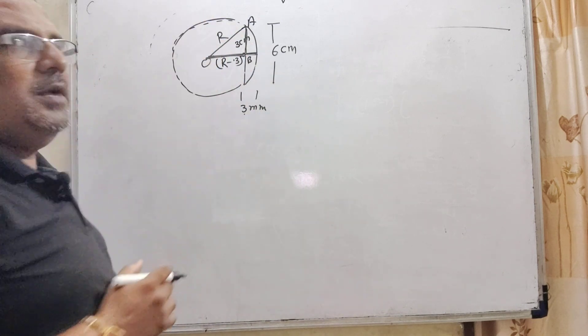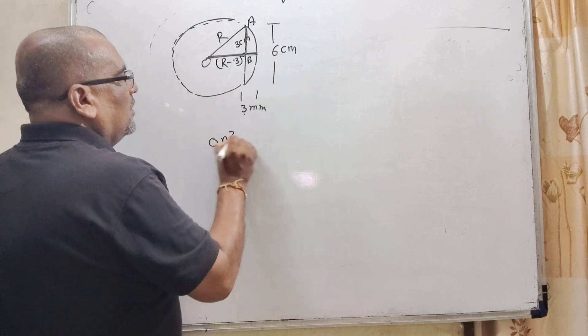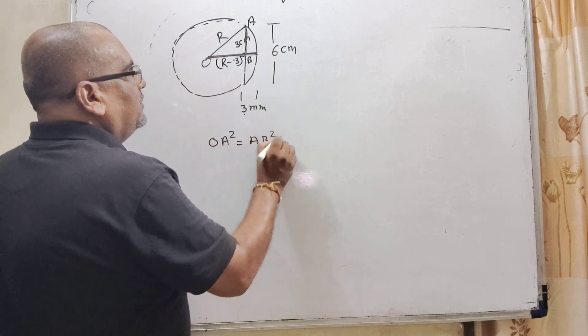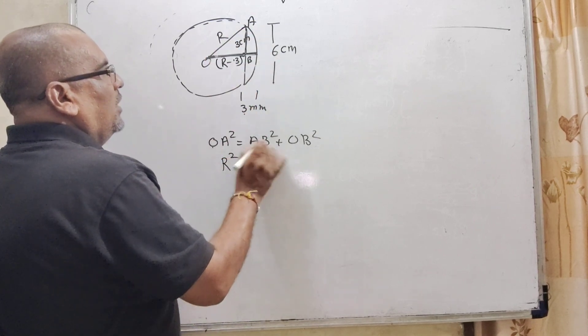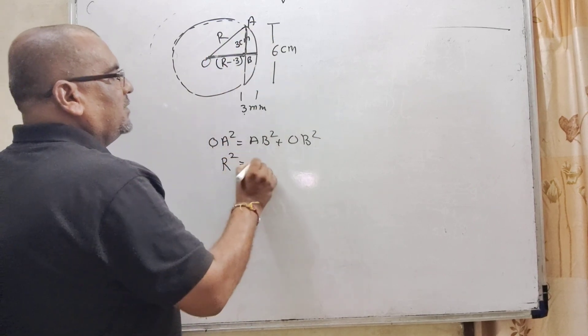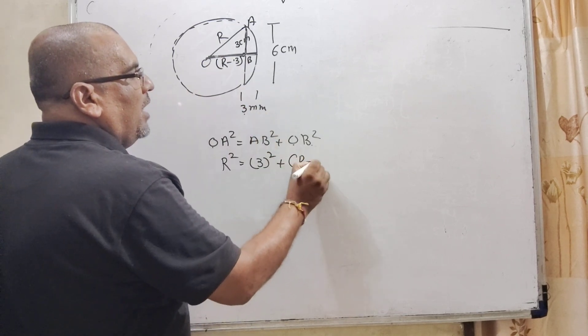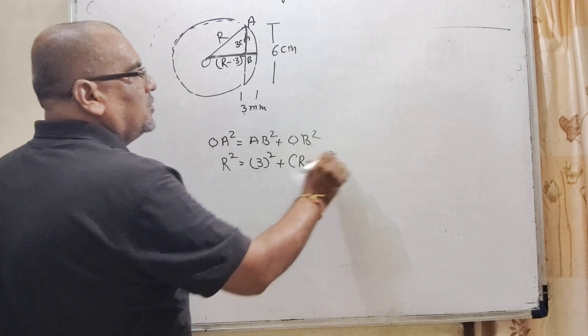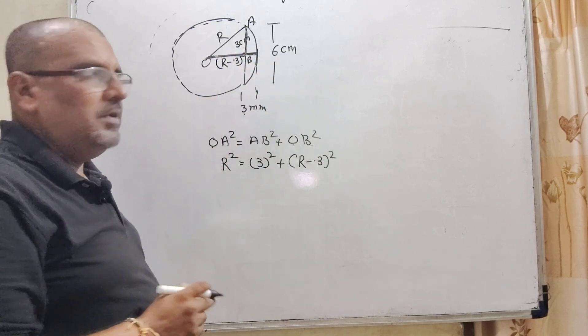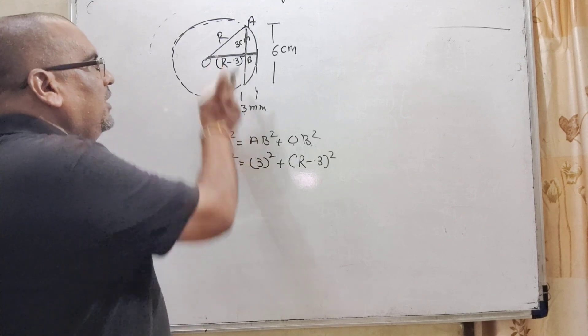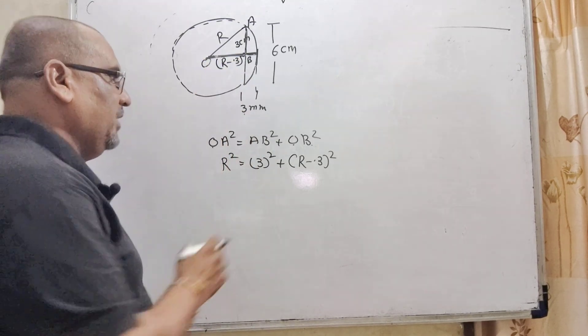So, let us calculate the R by using Pythagoras theorem. OB² = OA² + AB². What is OB? That is R. What is AB? AB is 3 cm. And what is OA? That is R minus 0.3 whole square. So, convert into centimeter becomes 0.3.